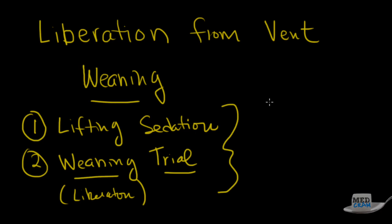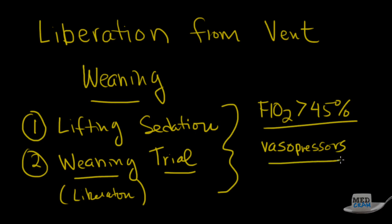Now, of course, there are exceptions to this rule here. Obviously, if the patient is on an FiO2 of more than 45%, that's probably a good reason not to even bother doing a set of parameters to see whether or not they can come off the ventilator. The other thing, of course, is if they're very unstable or if they're on high amounts of vasopressors. So those would be exceptions to that rule.